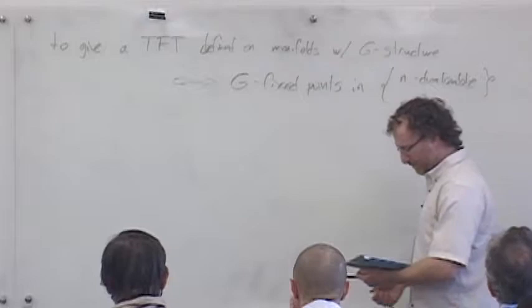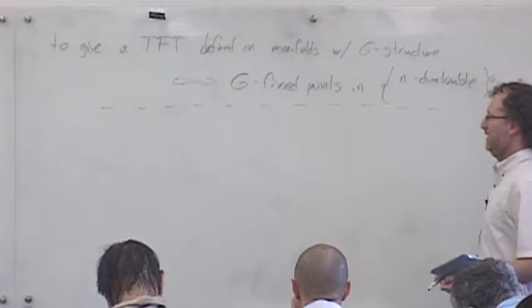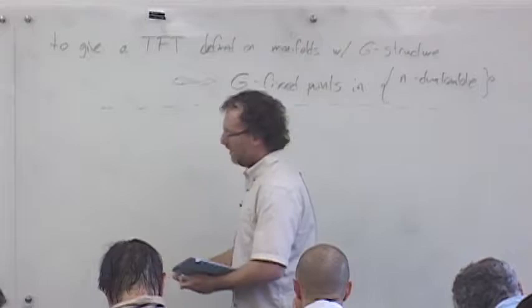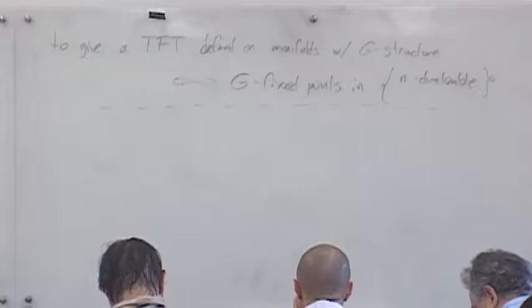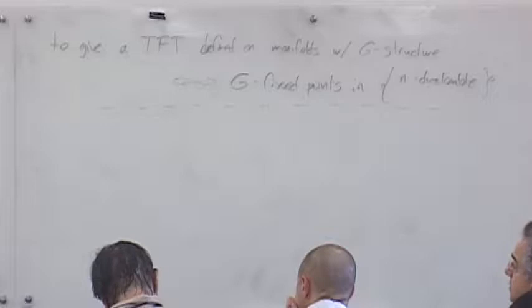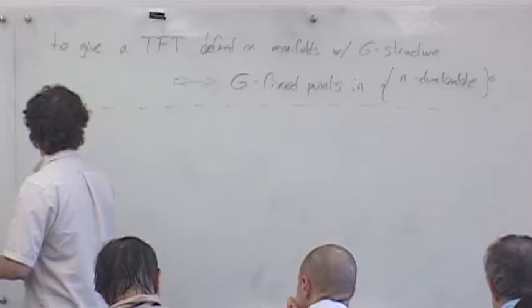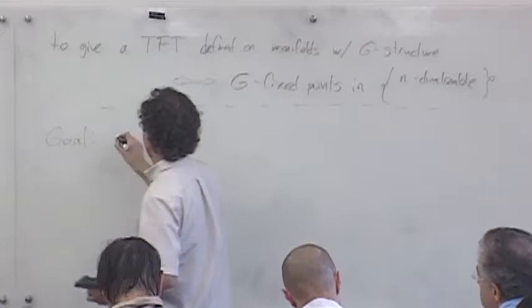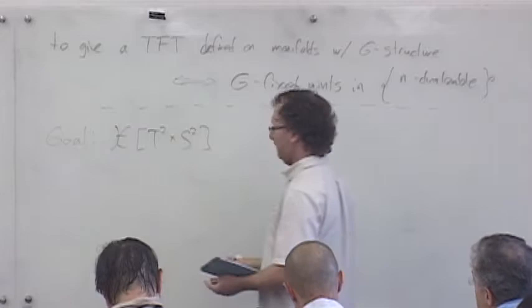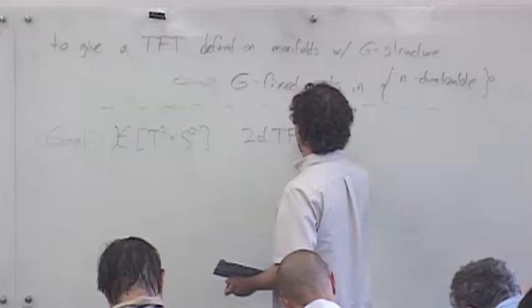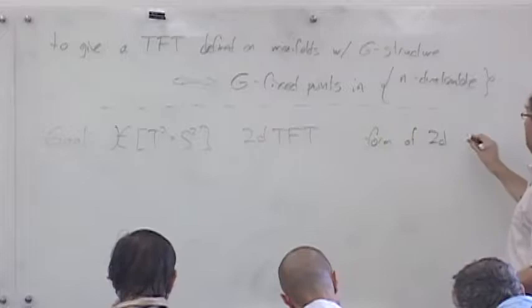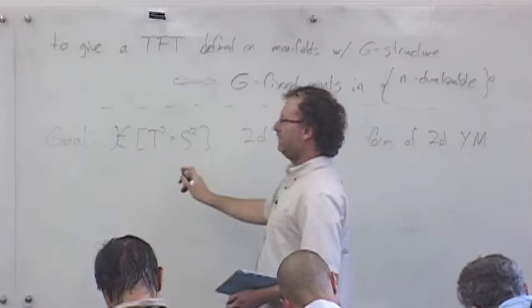I don't want to spend a lot of time on this abstraction, but I wanted to give a couple of examples. These examples will help us try to fill in this chart. My goal right now is to explain S² cross T². I'll start with a caricature of this. So the goal right now is to give this two-dimensional field theory, which will be S² times T², and this is going to be a form of two-dimensional topological Yang-Mills theory.